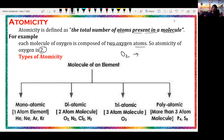Now we will discuss the types of atomicity. Molecules of an element are divided into four categories. Number one, we have monoatomic — those molecules having only a single atom in their molecular form are called monoatomic molecules. Examples include helium, neon, and krypton.